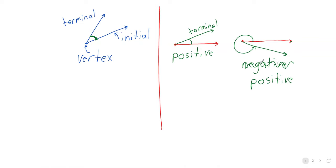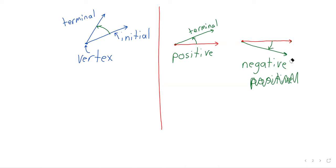So going back here, if we go from the initial to the terminal side in that counterclockwise way, it's a positive angle. Initial to terminal in a counterclockwise way — a positive angle. From initial to terminal in a clockwise way — that's a negative angle. But if you went from initial to terminal in a counterclockwise way, that would be a positive angle.